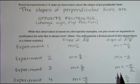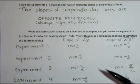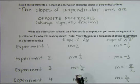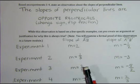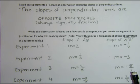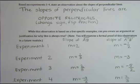Additionally, you can see that the rise over the run switched places and one of them became the opposite. For example, in experiment 3, the slope of segment AB was 2 over 5 — rise 2, run 5. The slope of the image segment A prime B prime was negative 5 over 2. The rise became 5 and the run became 2, and we had to move in the opposite direction. We only moved the opposite direction for either the rise or the run.